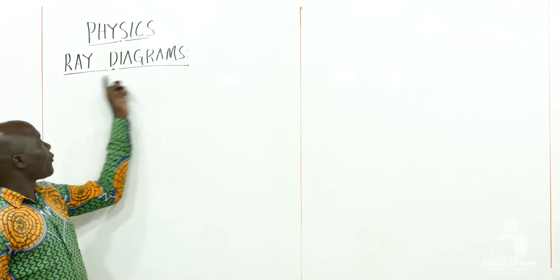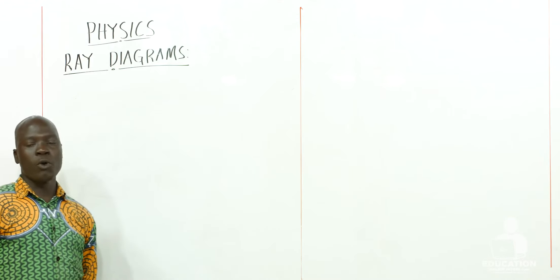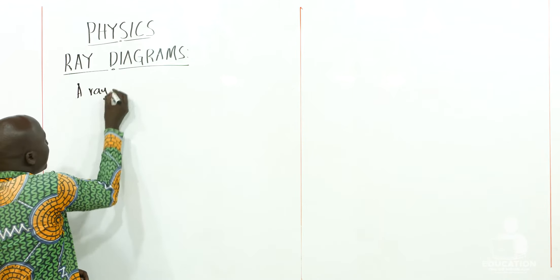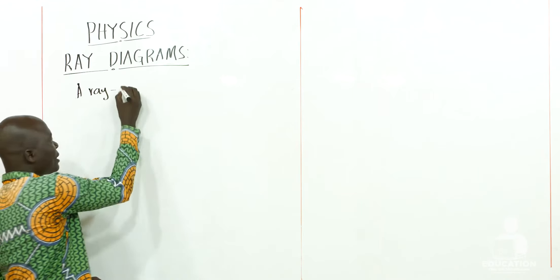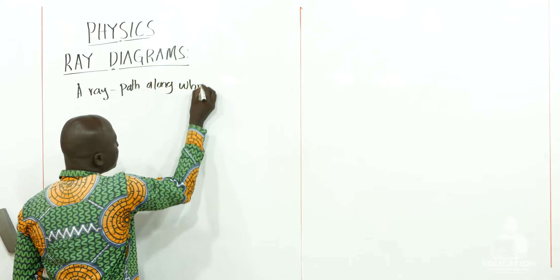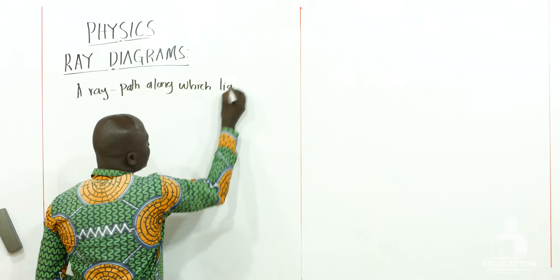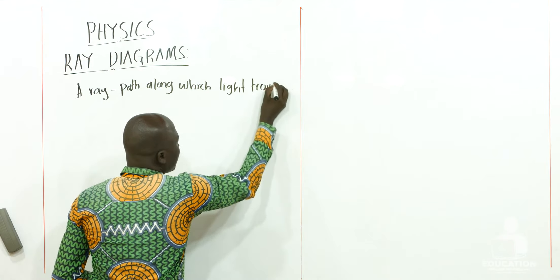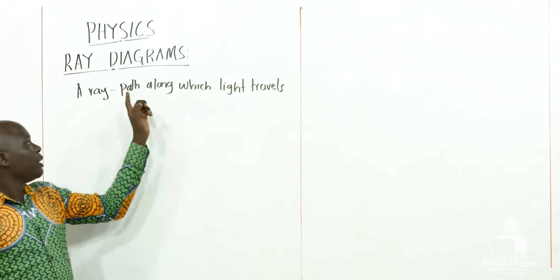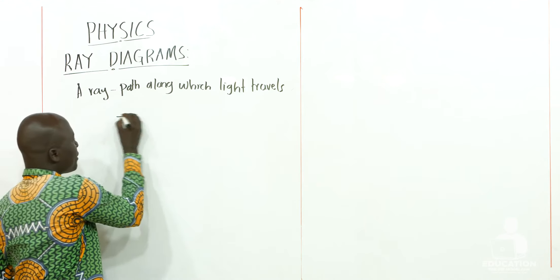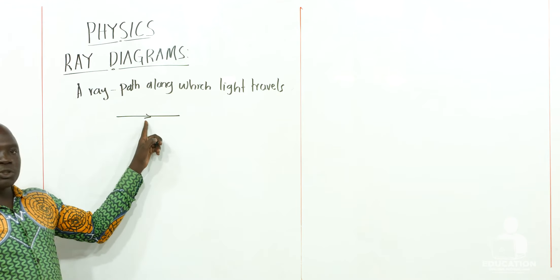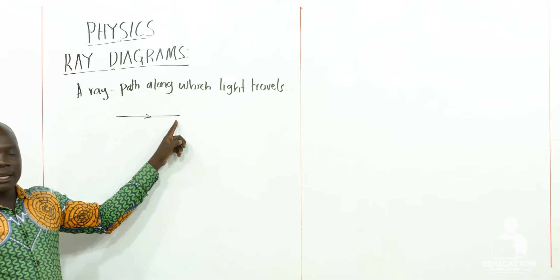For us to understand Ray Diagrams, we first need to know what a Ray is. A Ray is a path along which light travels. A ray is always represented with a straight line with an arrow. The arrow shows the direction towards which light travels.